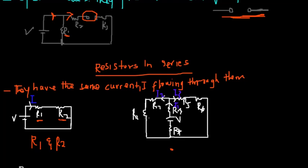In this next example with R1 and R2, current I2 passes through the entire path of R1 and then R2. This means that R1 and R2 are in series because the same current is flowing through them. We can state that R1 and R2 are in series.